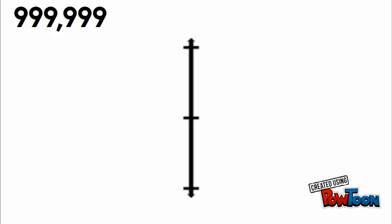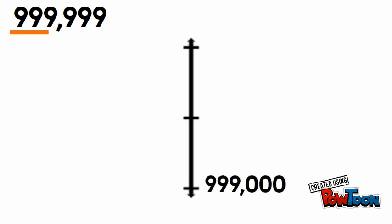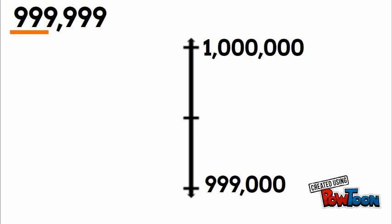Last example: nine hundred ninety-nine thousand nine hundred ninety-nine. We look at the thousands place. Our lower estimate will be nine hundred ninety-nine thousand, and one more up for our upper estimate would be one million. So halfway would be nine hundred ninety-nine thousand five hundred.